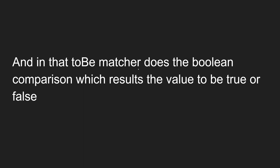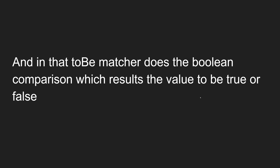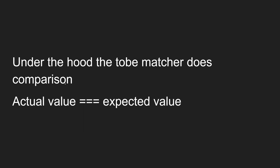The `.toBe` matcher does a boolean comparison between the actual value and the expected value, and returns whether that comparison is true or false. Specifically, the `.toBe` matcher does a triple-equals (`===`) comparison of the actual value to the expected value, returning either true or false.